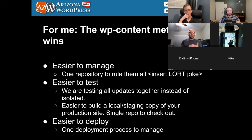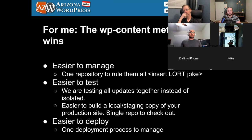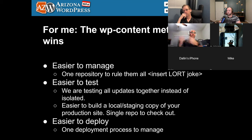It's way easier to test — I can make a big change set, hand it off to another developer, and instead of them updating two or three things they update one branch and test easily. It's easier to build your local and staging copy out of a production site with a single repo. I can check out the exact same repo that's on production, pull in the production database with WP Migrate, and I'm running the production version locally — super useful for debugging. It's much easier to deploy one repo than five or six.